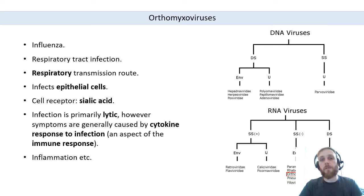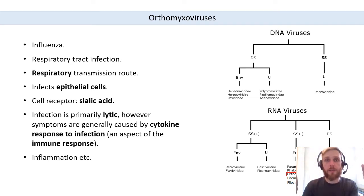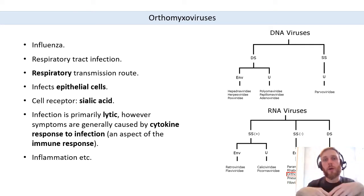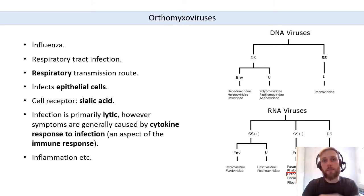Influenza virus infects epithelial cells of the respiratory tract and induces an immune response. It is a lytic infection — it can kill infected cells — however this is not primarily what causes disease symptoms. It's primarily the immune response: localized inflammation and wider responses triggered by cytokine activation as a consequence of the virus being present in these cells. Another clear example of the immune response being implicated in specific pathogenesis.